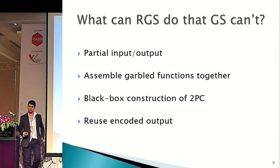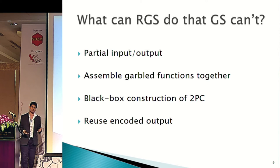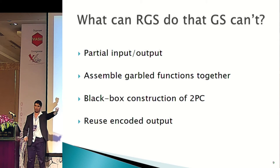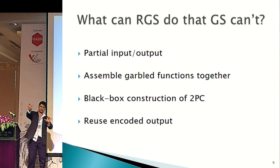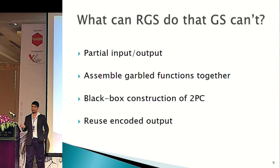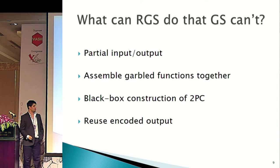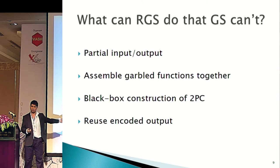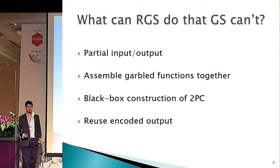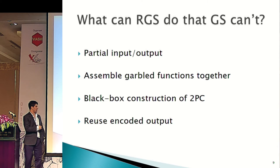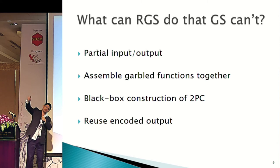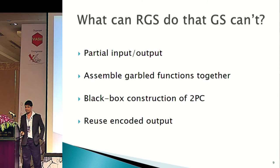Why did we define reactive gobbling schemes? There are certain things that standard gobbling schemes can't do. First, as you saw in the previous diagram, there's no partial input and output defined. Sometimes it's useful, for example in secure outsourcing, to be able to provide partial input. You can't assemble garbled functions together — you might want to garble one function and then another and decide to apply f then g or vice versa, for example in signal processing. And you can't do black box constructions of 2PC from gobbling schemes — that was one of the original goals that Rogaway wanted, but we can't. Reactive gobbling schemes give what was missing. We also want to reuse encoded outputs: get an encoded output and feed it into another garbled function.